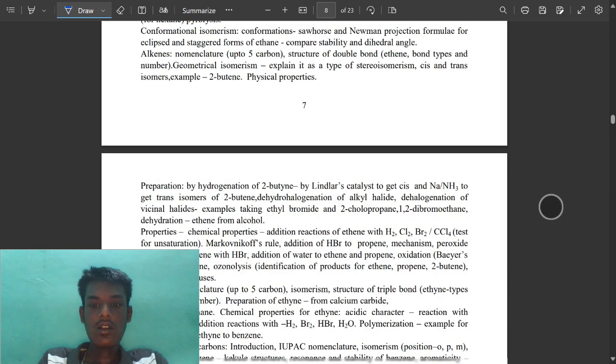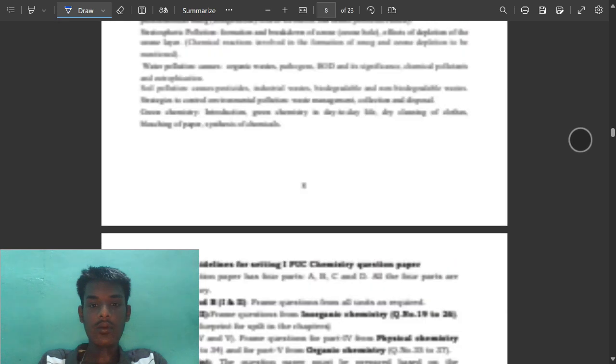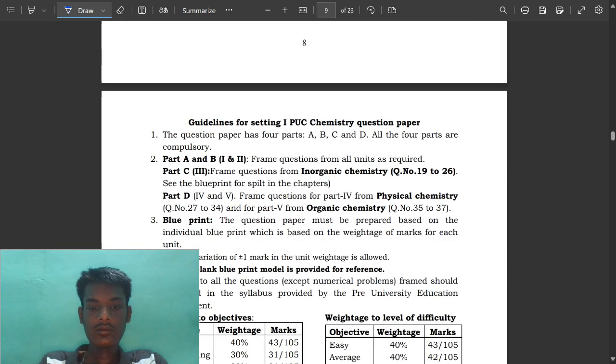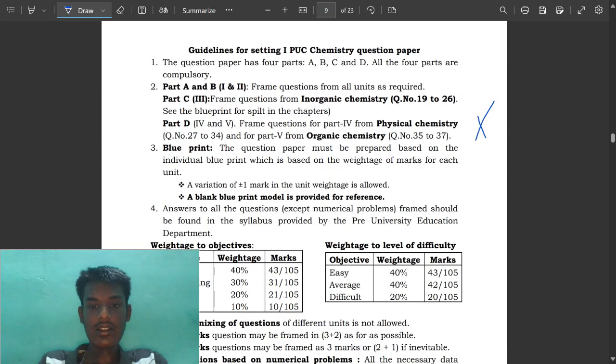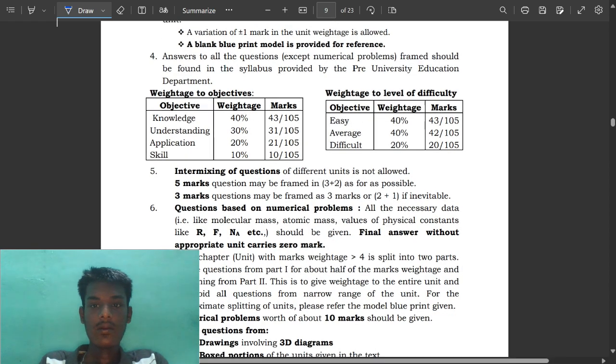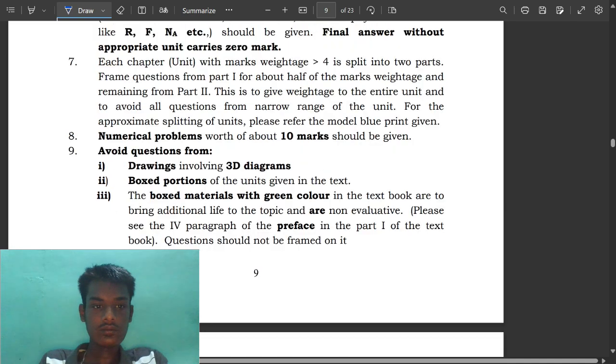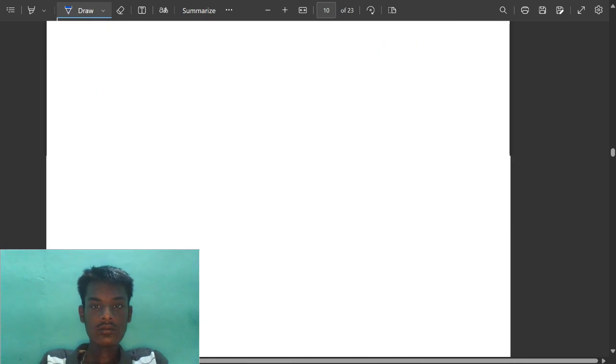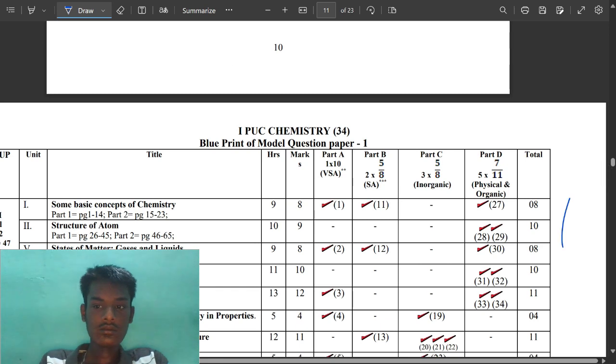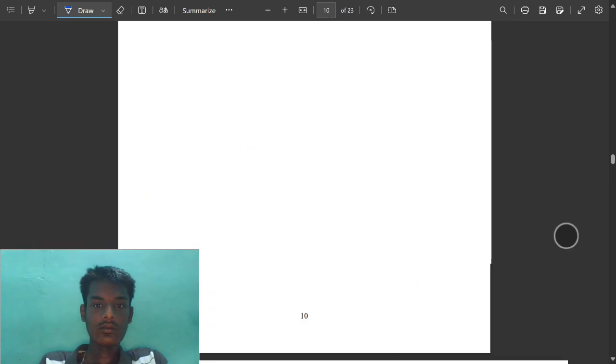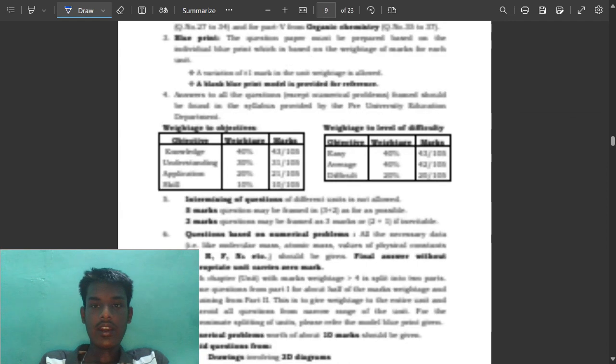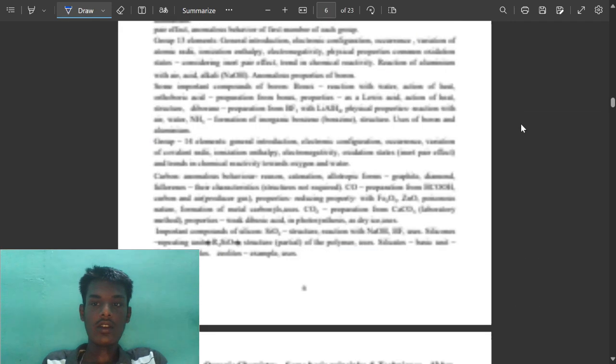Weightage of difficulty and weightage of objectives. Difficulty weightage is 20% easy, average is 40%. We have to study the important questions. I think this will be much more important to you. Don't forget to subscribe, like and share. Bye guys.